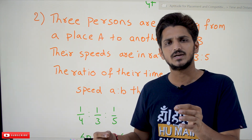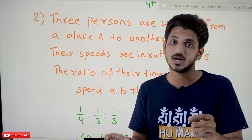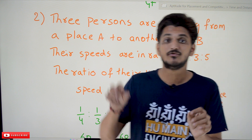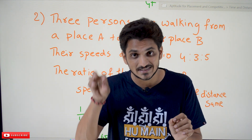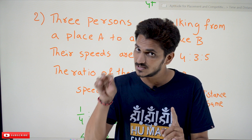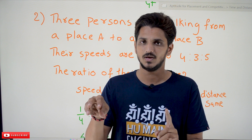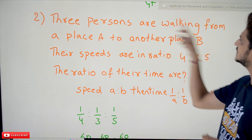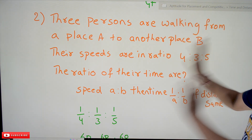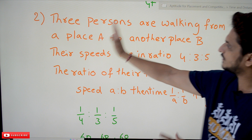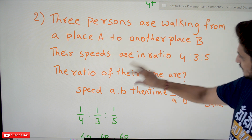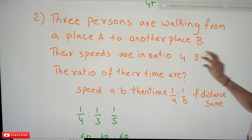Speed = distance/time means speed is inversely proportional to time. We underlined that this formula applies only if the distance is the same. From the question: is the distance the same? Yes — three persons are walking from A to B, so distance is the same. They have given the speed ratios.